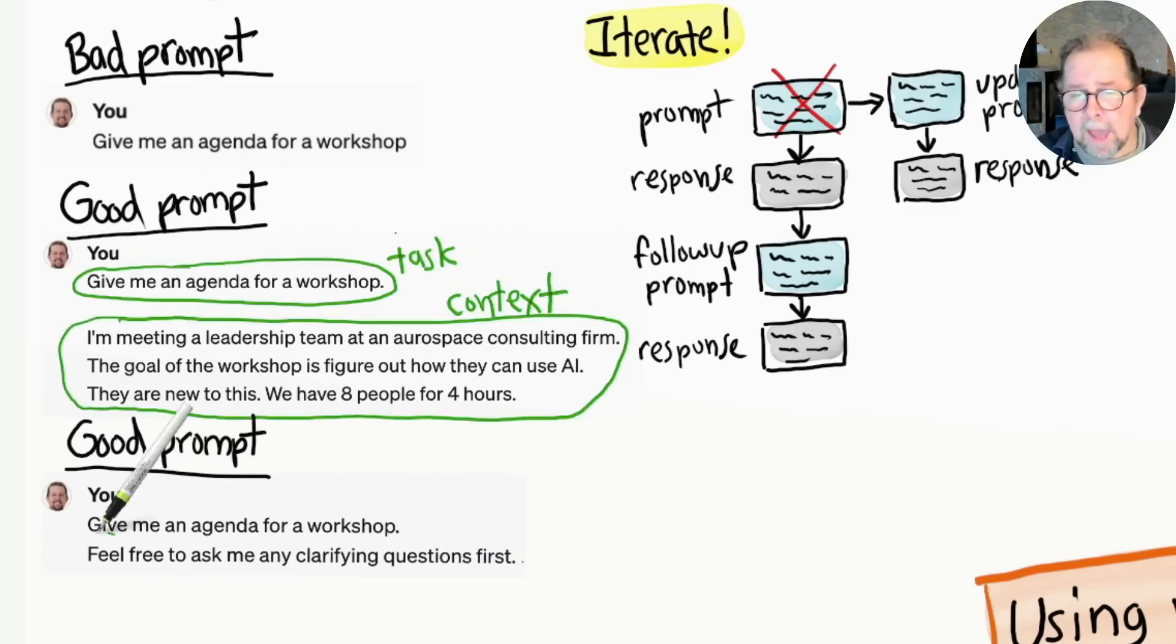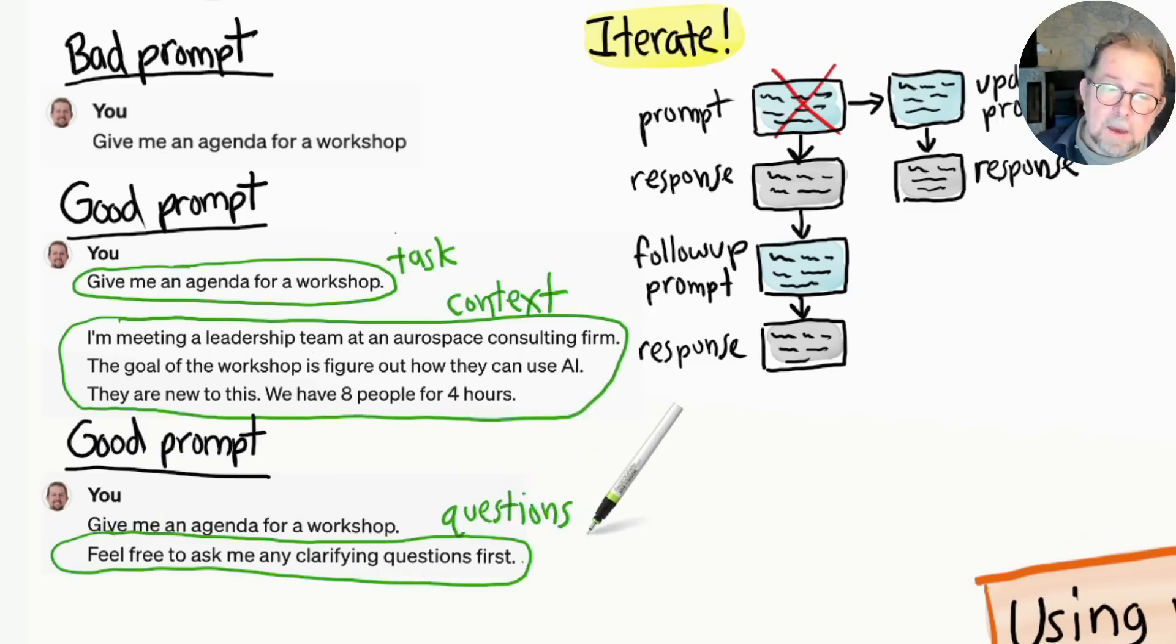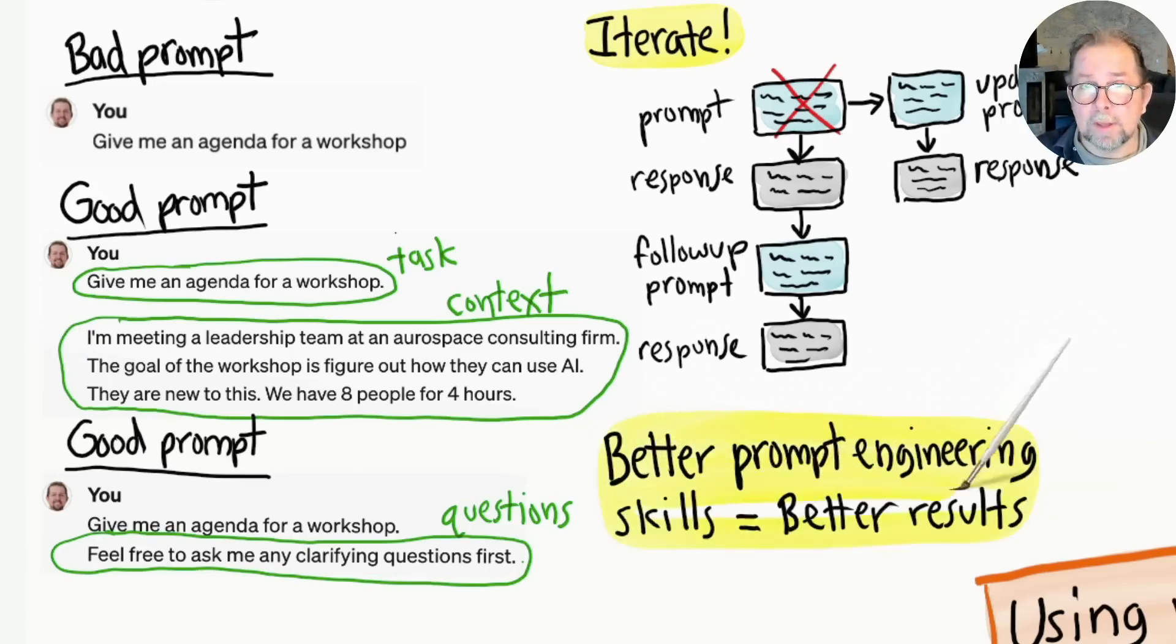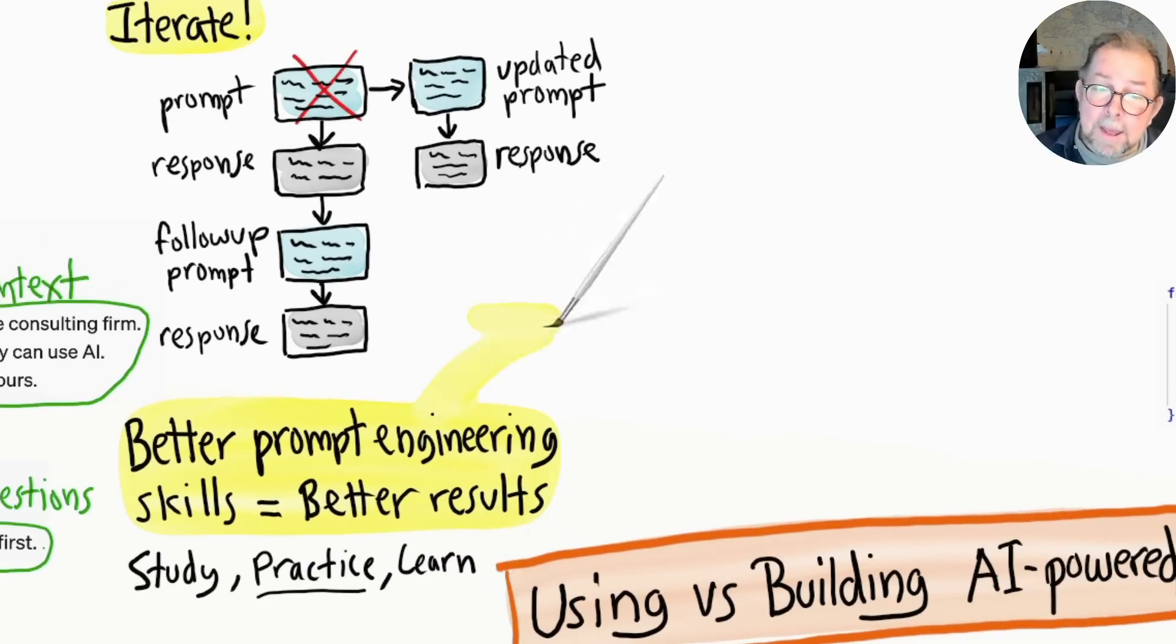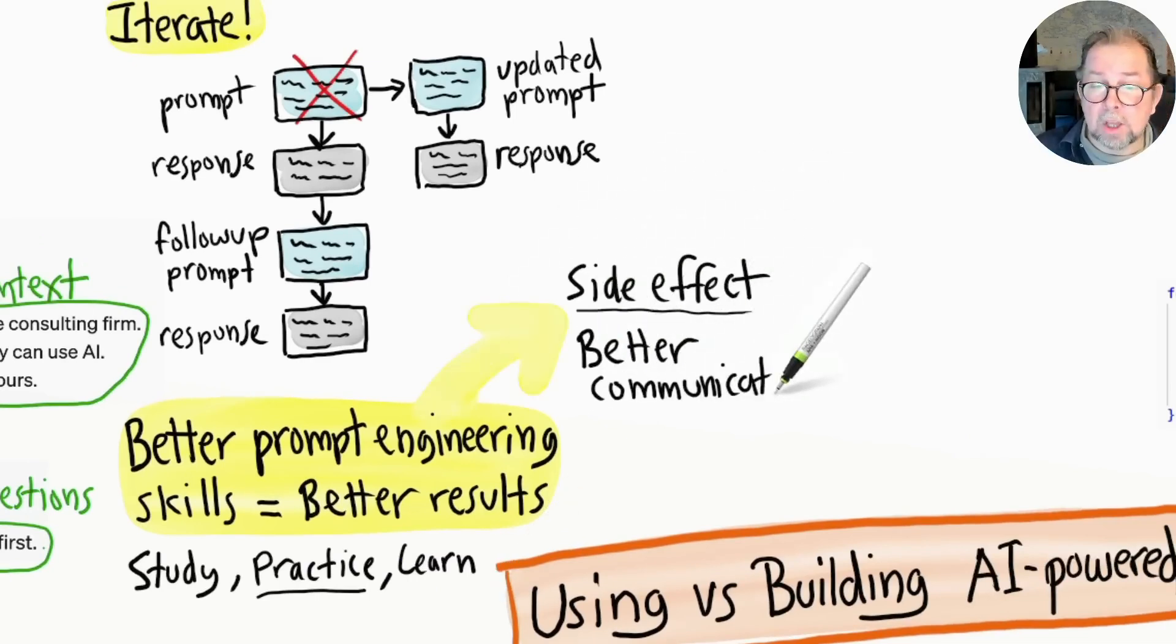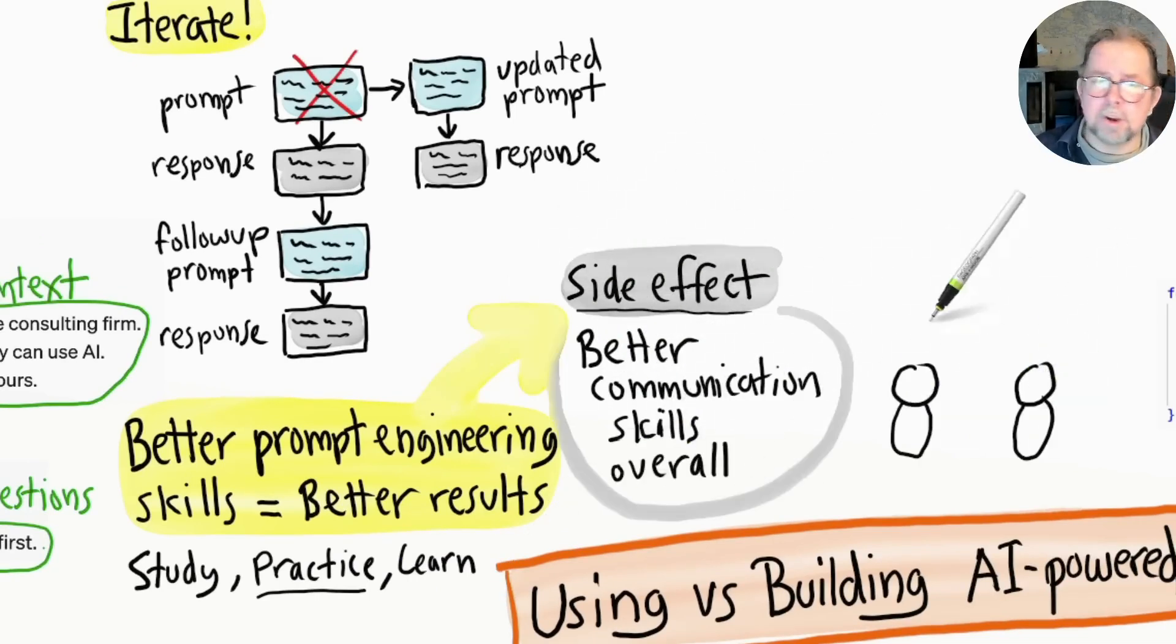So overall, the better you get at prompt engineering, the faster and better results you will get from AI. There are plenty of courses, books, videos, articles to help you learn this, but the most important thing is to practice and learn by doing. A nice side effect is that you will become better at communicating in general, since prompt engineering is really all about clarity and effective communication.